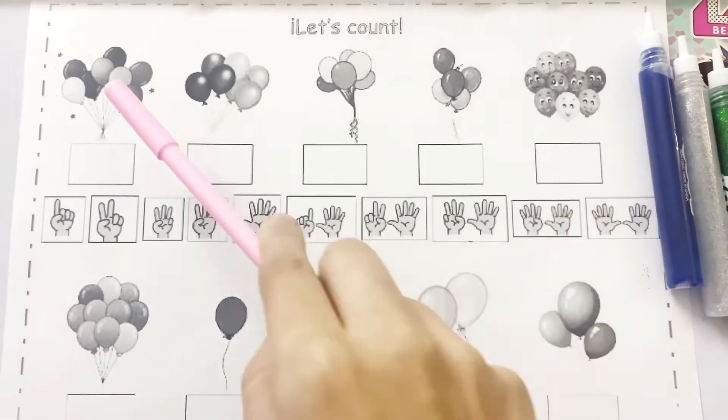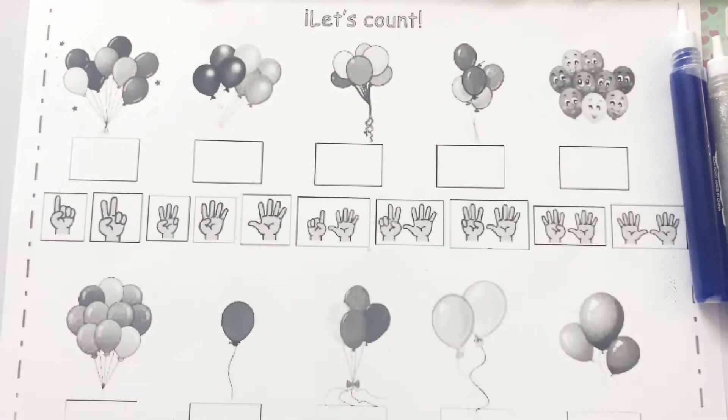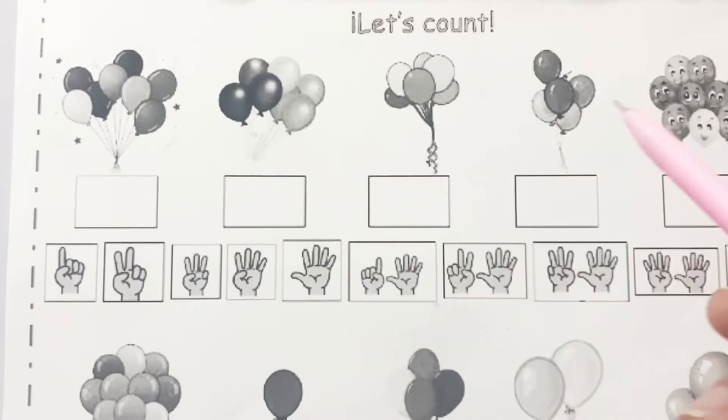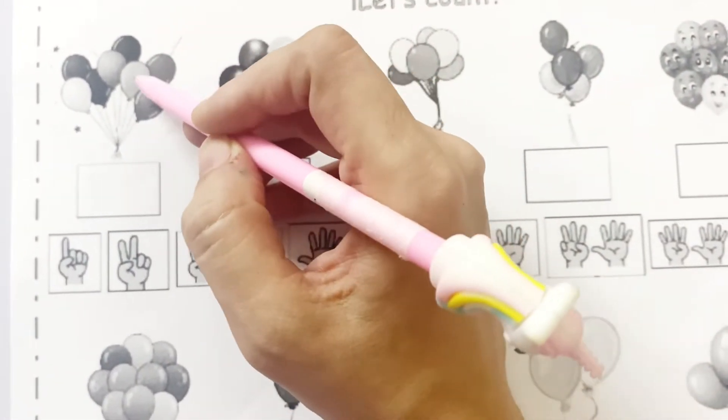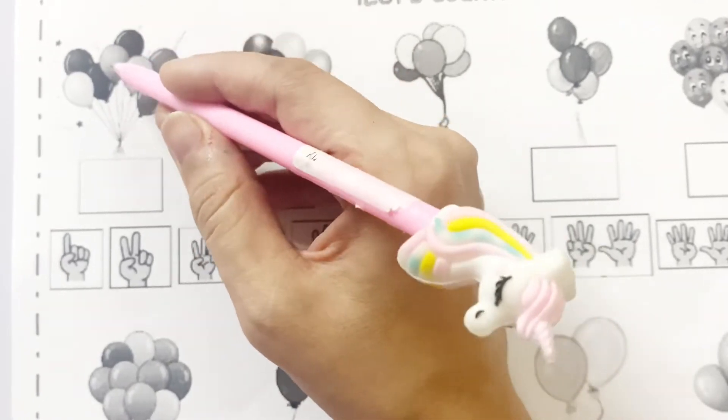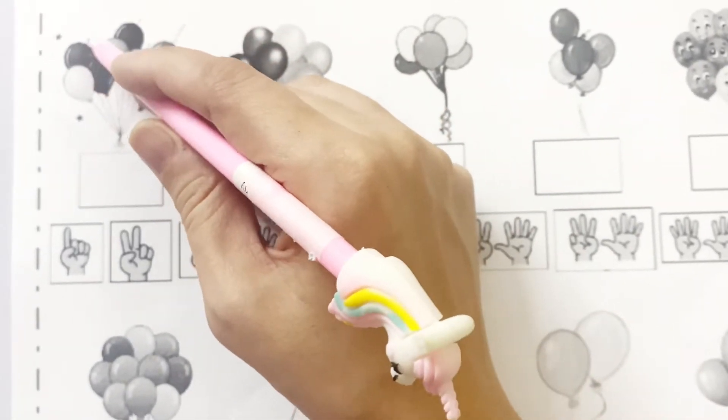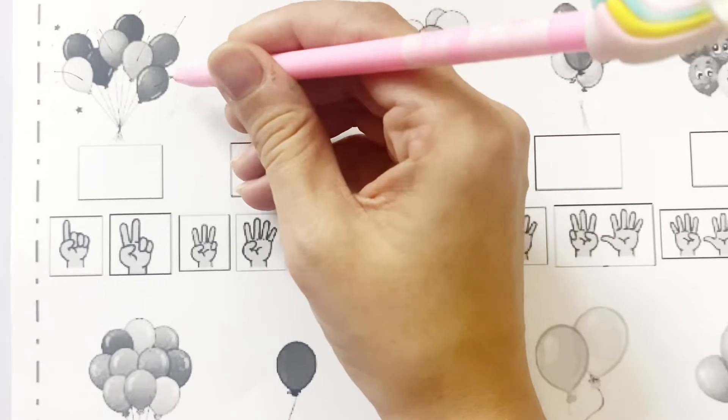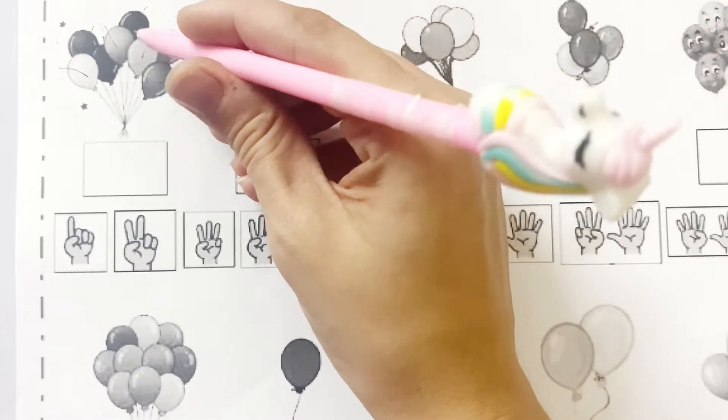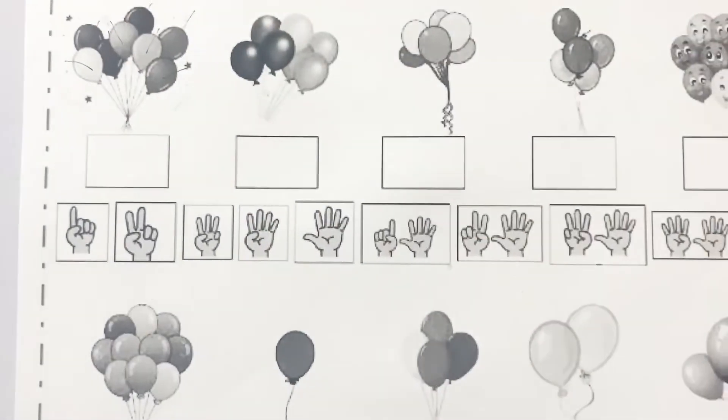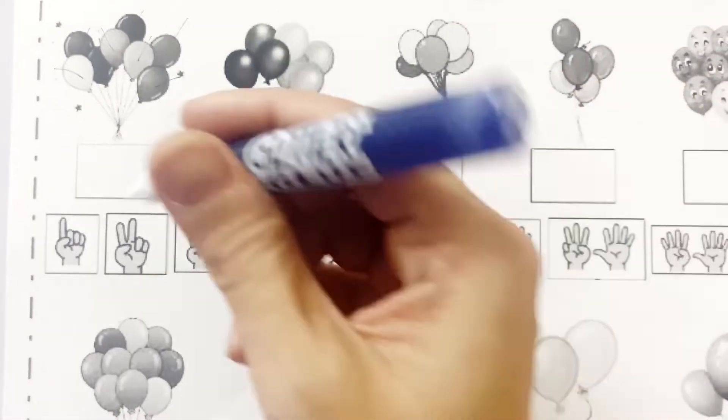So let's start from here. Let's count. 1, 2, 3, 4, 5, 6, 7 and 8. So how many balloons? 1, 2, 3, 4, 5, 6, 7 and 8. So we will write 8.